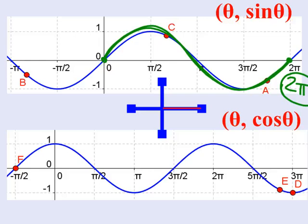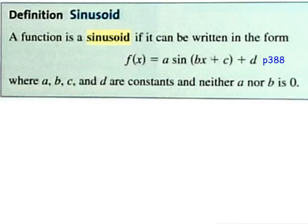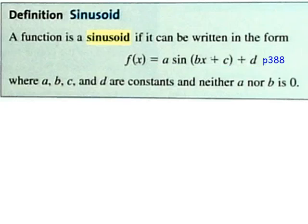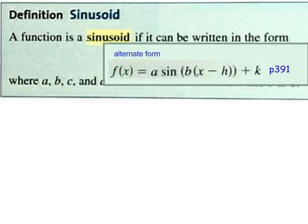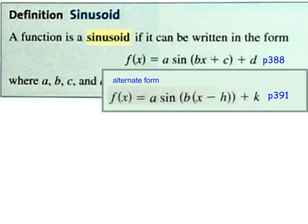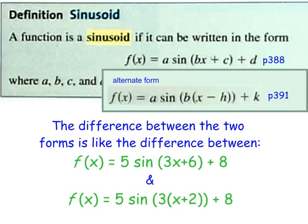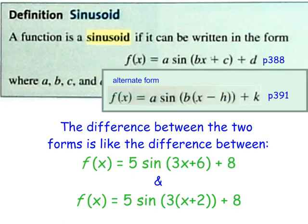A sinusoid is any function that can be written in a specific form. When you look at it, start digging up memories of transformations — vertical and horizontal translations, vertical and horizontal stretches and shrinks, reflections. I prefer an alternate factored form. For example, if you have 3x + 6 inside the sine function, factoring out the 3 gives you 3(x + 2). We need to ask: which form better reflects the horizontal translation?